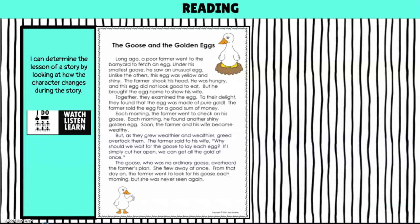Long ago a poor farmer went to his barnyard to fetch an egg. Under his smallest goose he saw an unusual egg. Unlike the others, this egg was yellow and shiny. The farmer shook his head — he was hungry and this egg did not look good to eat. But he brought the egg home to show his wife. Together they examined the egg.